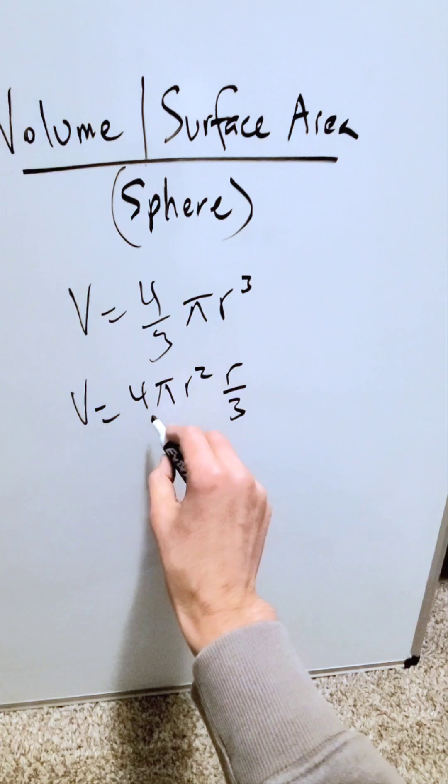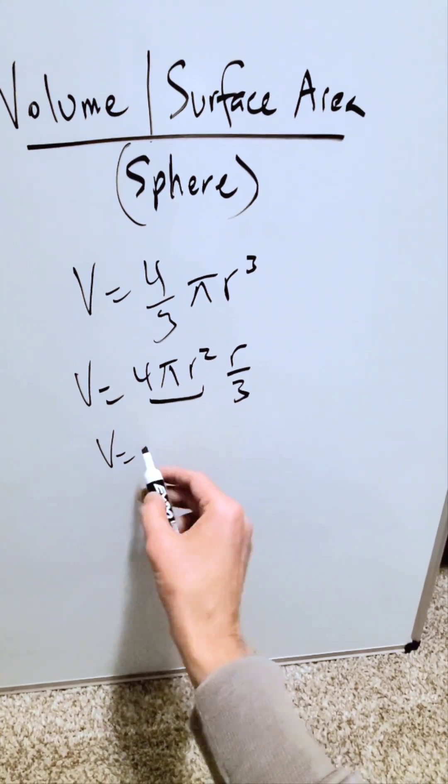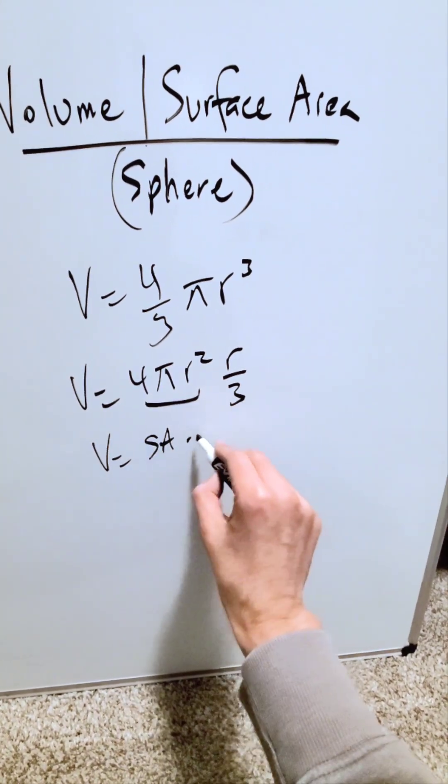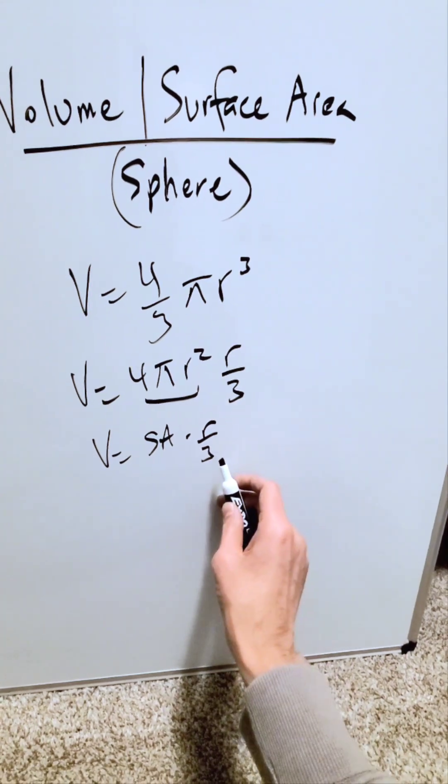Now look, I'm seeing here surface area. So I'm seeing volume of a sphere is equal to surface area of that sphere times radius, a third of that radius.